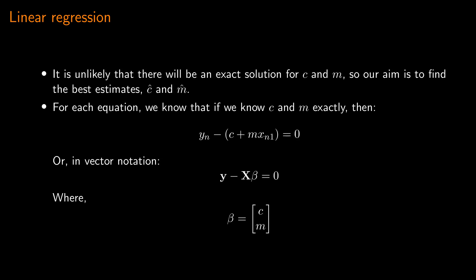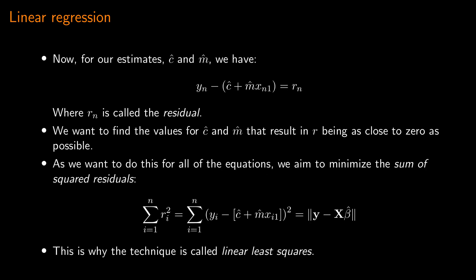For each equation, if we did know c and m exactly, then y minus (c plus mx) would equal zero, or in vector notation, y minus x·beta equals zero, where beta is the vector of unknowns c and m. For our estimated values c-hat and m-hat, we have y minus (c-hat plus m-hat·x) equals r, where r is called the residual. Our goal is to find the values of c-hat and m-hat that result in r being as close to zero as possible for all equations in our system. So we aim to minimize the sum of squared residuals — which is why the technique is called linear least squares.